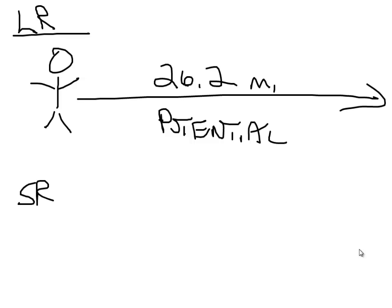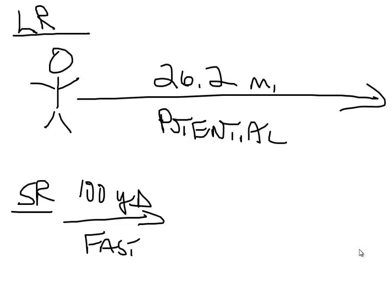But in the short run, say over 100 yards, our runner can run a lot faster. He might run 100 yards really fast, but after that 100 yards he might have to run the next one slow. So think of potential as your slow and steady pace — you can do this the entire day. But in the short run, sometimes the economy can speed up — we have an expansion. Sometimes it slows down. And this ebb and flow, this fast and slow, we call that the business cycle.